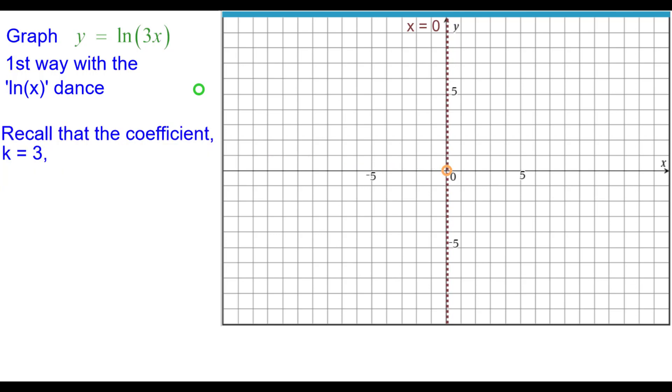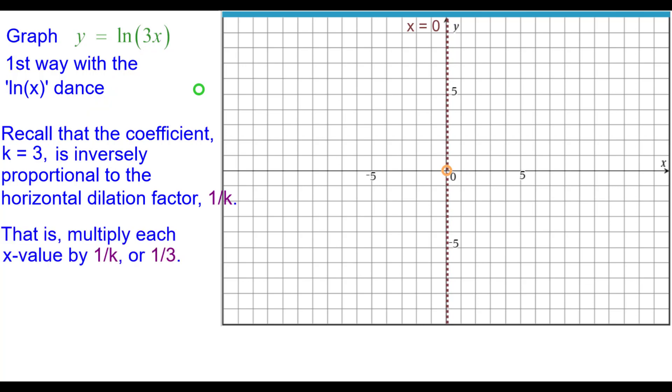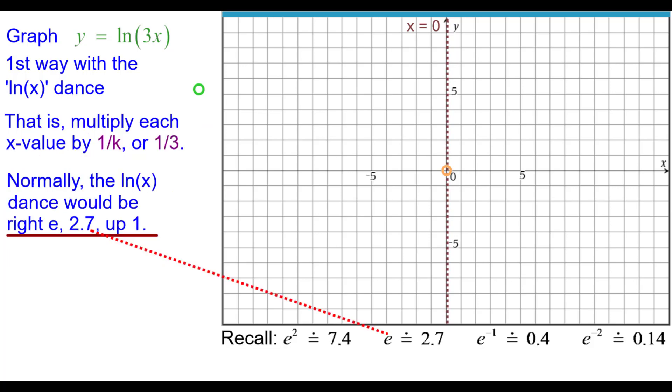Also recall that the coefficient k equals 3 is inversely proportional to the horizontal dilation factor. That is we're going to multiply each x value by the reciprocal of 3 which is one third. Normally the natural log dance would be right e up 1. We would put these values in that hopefully you would know for your reference. Also keep in mind that the natural log function and e to the x function are inverses of one another.